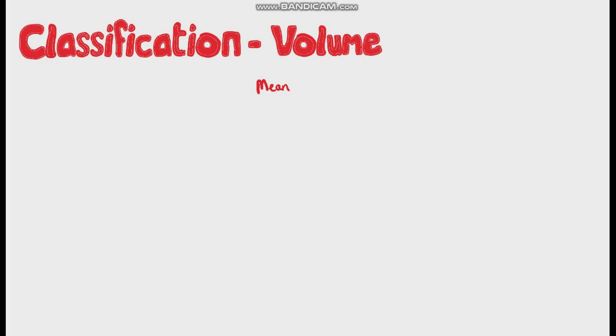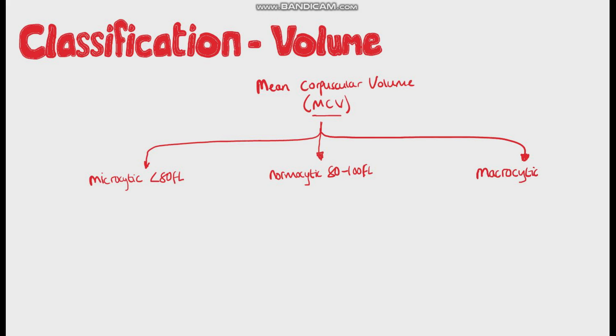Let's take a look at the volume classification first. This is based on the MCV, or mean corpuscular volume of the red blood cells, which is just the average volume of the red blood cells in a sample. Microcytic anemia is defined when the value is below 80 femtoliters, normocytic is 80 to 100 femtoliters, and macrocytic anemia is above 100 femtoliters. We can then fit the different types of anemia into these three categories.